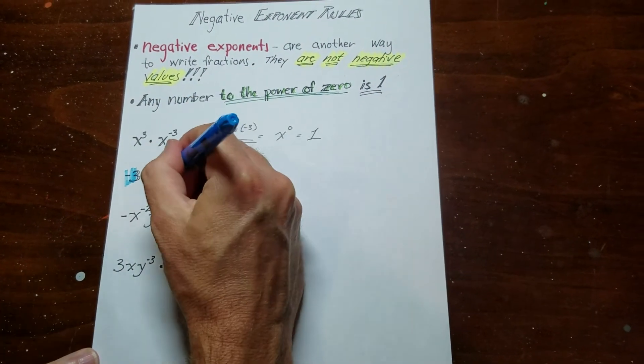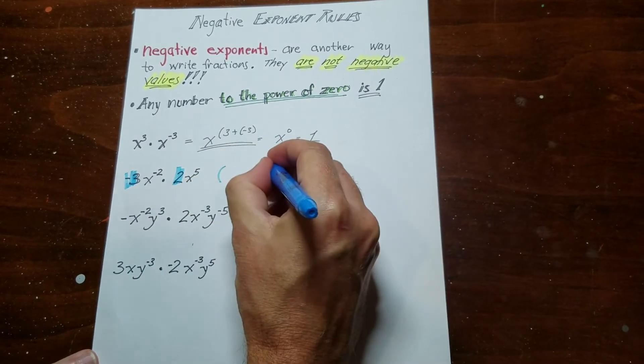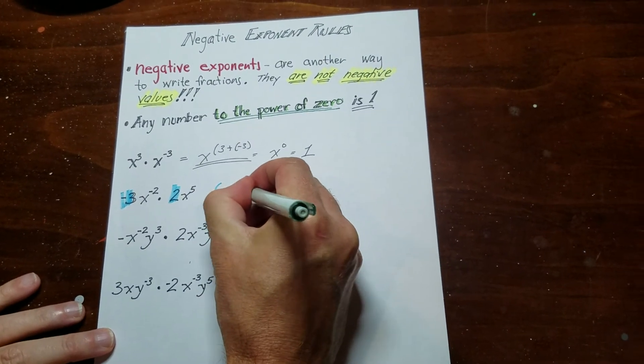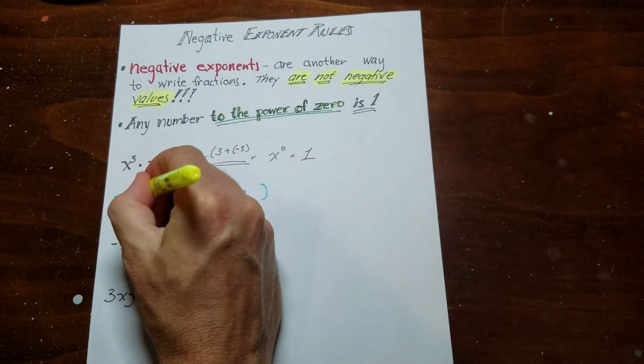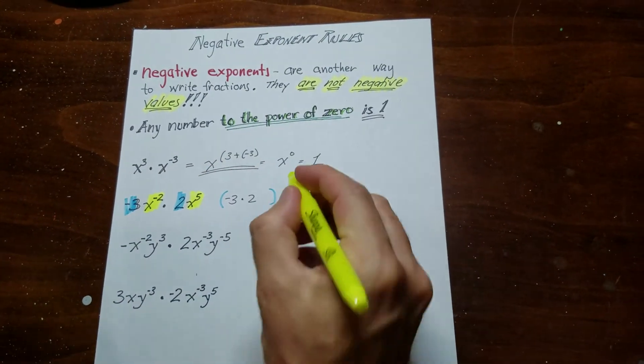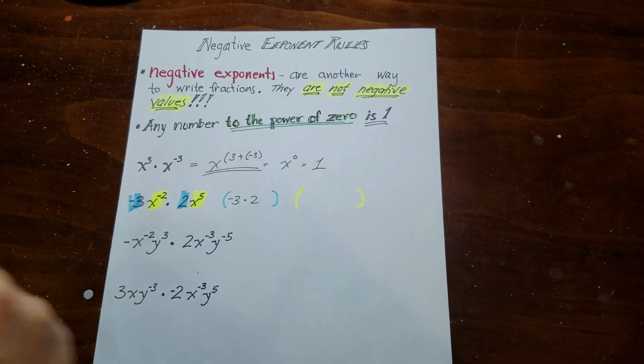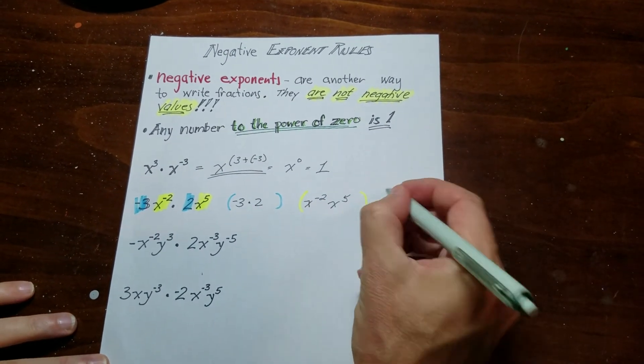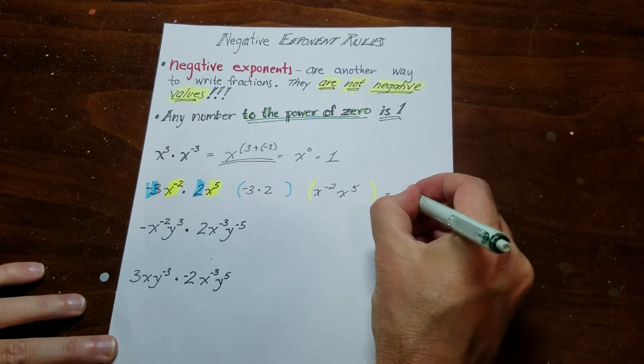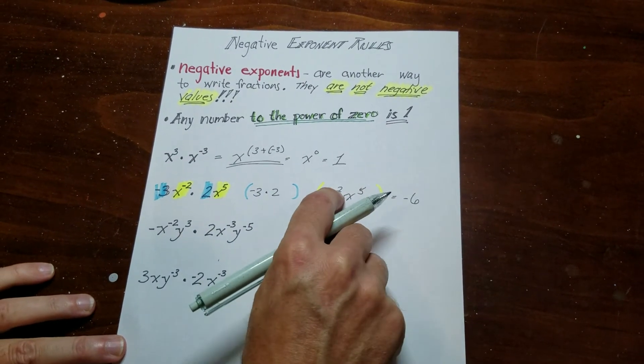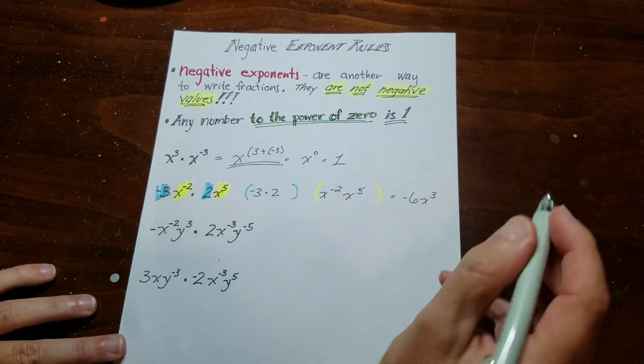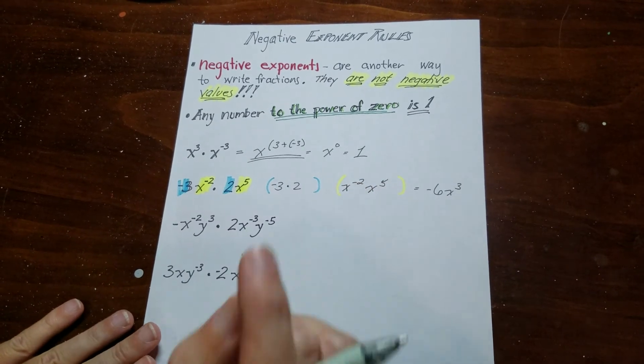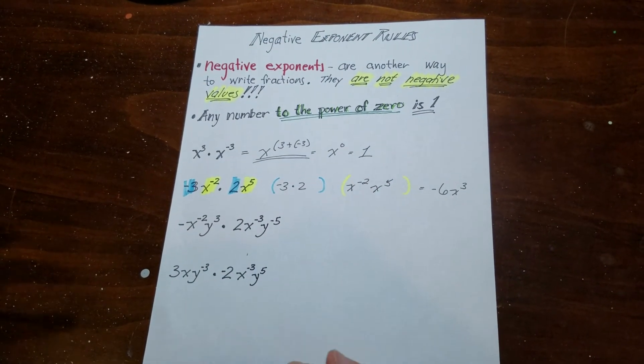I'm going to organize this. So I have negative 3 times 2, and then I've got my x terms. So I have x to the negative 2 and x to the 5. So this is negative 6, and then 5 plus negative 2 is x to the third. So nothing happened there. You can see it follows the rules exactly like last time. It's just that when we're adding the exponents, actually one of them is a negative, so you're subtracting. But that's the only difference.